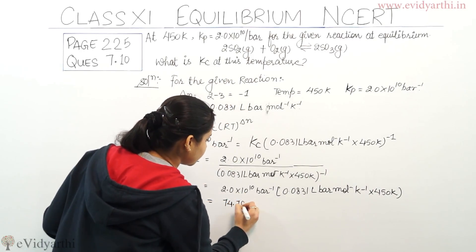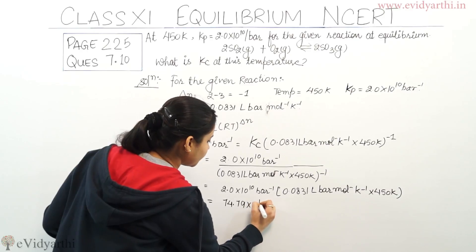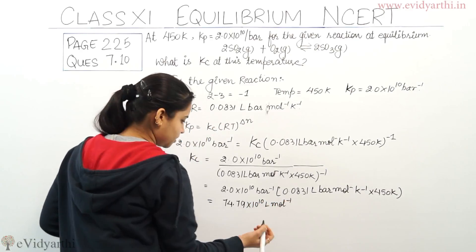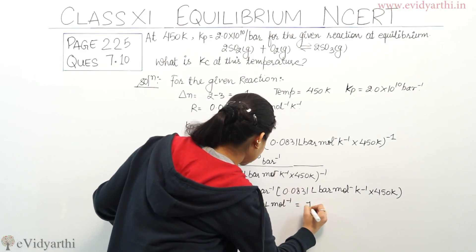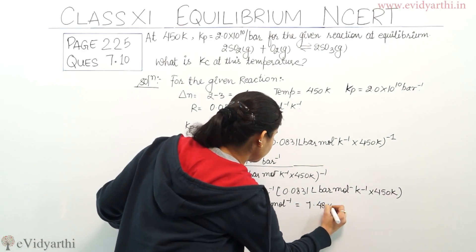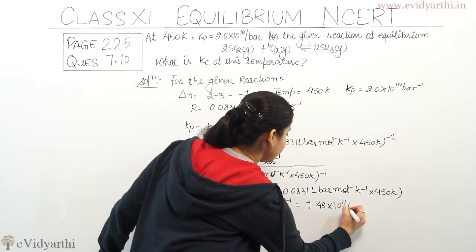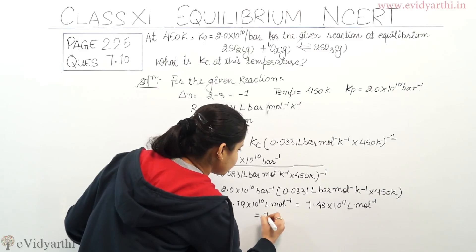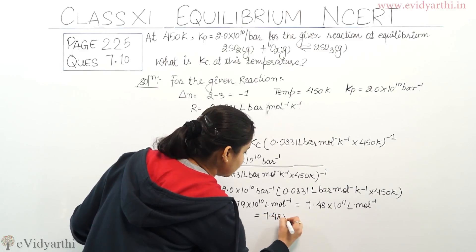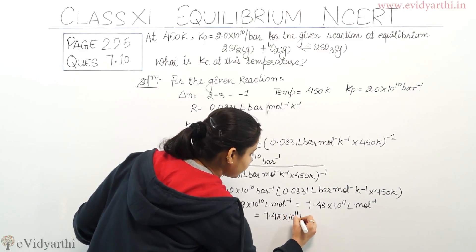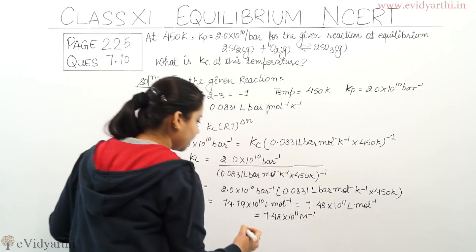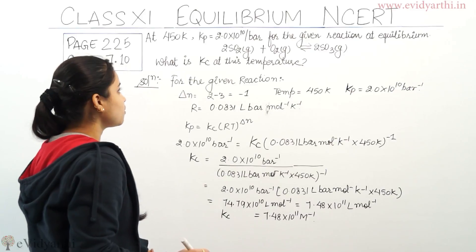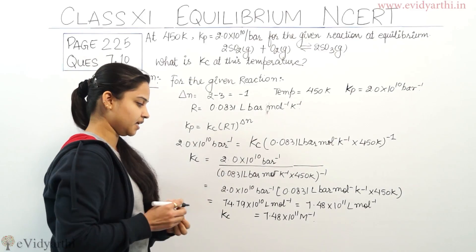The answer is 74.79 × 10^10 liter mol^-1, which can also be written as 7.48 × 10^11 liter mol^-1, which in turn equals 7.48 × 10^11 molar inverse. So this is the value of Kc at a temperature of 450 Kelvin.